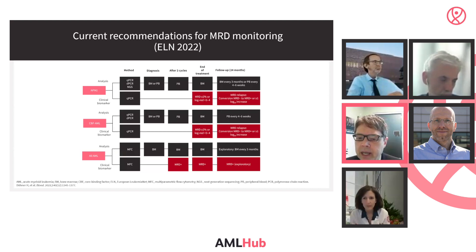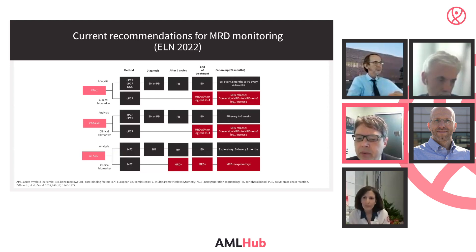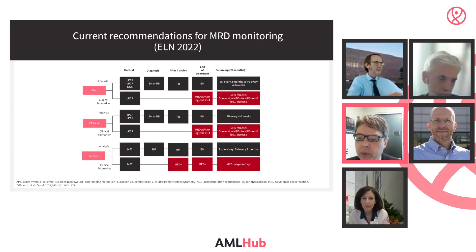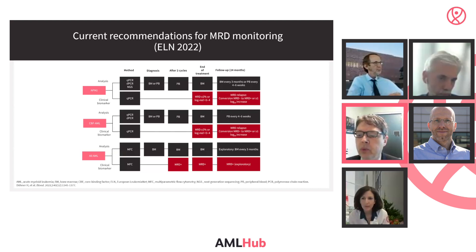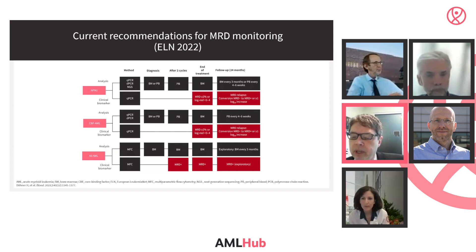An important question pertains to MRD testing in the non-favorable, primarily the ELN intermediate risk AML setting: can or should the MRD assessment at the end of treatment supersede the baseline molecular risk stratification for determining next steps in treatment? For example, allogeneic transplant — so an ELN intermediate risk patient, or maybe even a poor risk patient, but probably more the intermediate risk patients — how should we be using MRD assessment at the end of treatment to make decisions, if at all?